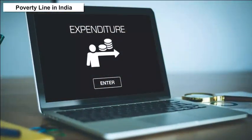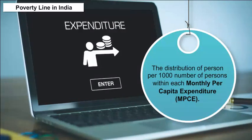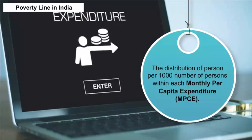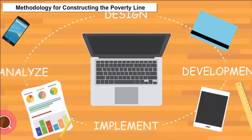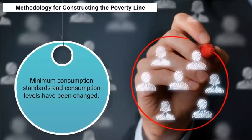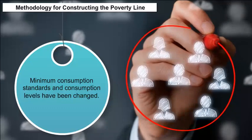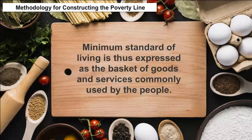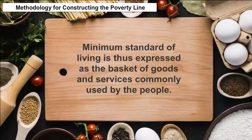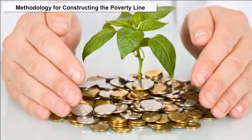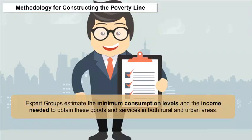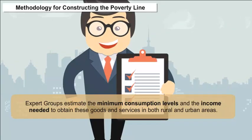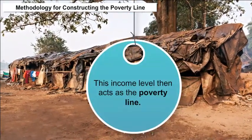The distribution of persons per thousand within each monthly per capita expenditure (MPCE) bracket is obtained by the NSS Consumer Expenditure Survey. The methodology for constructing the poverty line: the concept of minimum consumption standards and consumption levels has been changed based on recommendations of various expert groups or task forces. The minimum standard of living is expressed as a basket of goods and services commonly used by the people; based on this, expert groups estimate the minimum consumption levels and the income needed to obtain these goods and services in both rural and urban areas. This income level then acts as the poverty line.